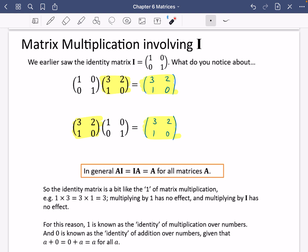So what I've written is that in general AI is equal to IA which is equal to A for all matrices A or all square matrices that it would be able to multiply with. So this is I, this is A and you'll notice it's equal to A. This is A, this is I and it's equal to A.